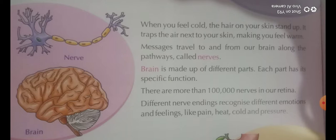Humari brain ki through jo messages pass hote hain — you can see here the picture of brain and nerve also. Brain is made up of different parts — hamara jo brain hai woh alag-alag parts se mil karke bana hota hai. Each part has its specific function. There are more than one lakh nerves in our retina.